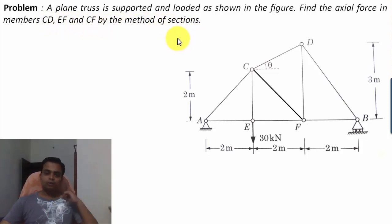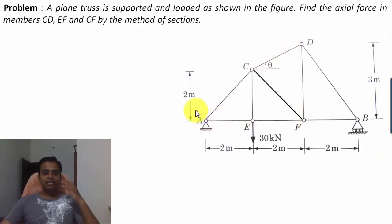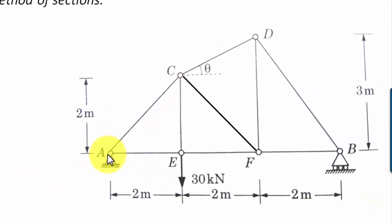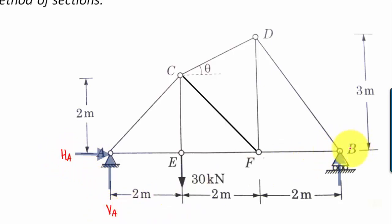Before applying the method of sections to find the actual forces in members CD, CF, and EF, you need to first find the reactions at the supports. Over here we have a hinged support and hence there are going to be two reactions. Let's say this is point A — there is a horizontal reaction HA and a vertical reaction VA at A. At point B we have a roller support and hence there is going to be one single reaction RB.